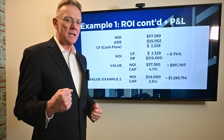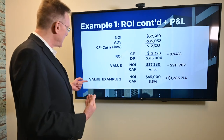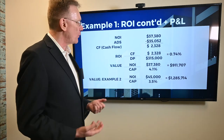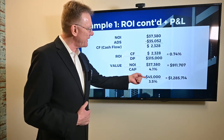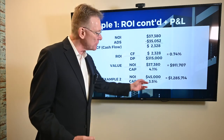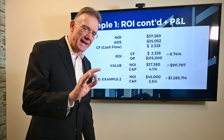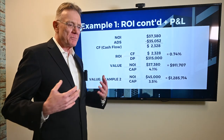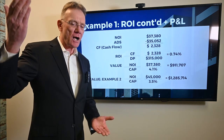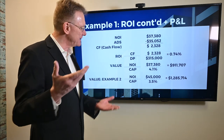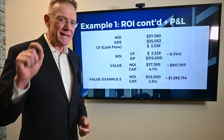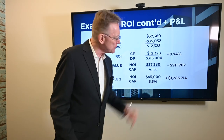Just to drive home the point about cap rates: if you took a separate property generating an NOI of $45,000 — slightly more than example one — but with a much lower cap rate of 3.5, the lower the cap rate, the more valuable the property, and it may reflect a blue-chip neighborhood. A higher cap rate reflects higher risk. So with that lower cap rate, this building generating $45,000 NOI actually has a value of close to $1.3 million.